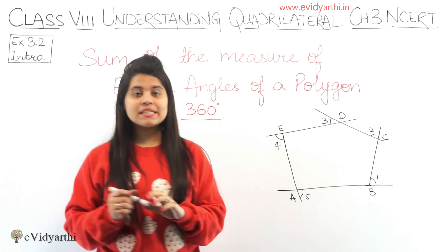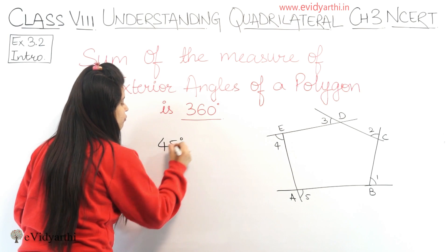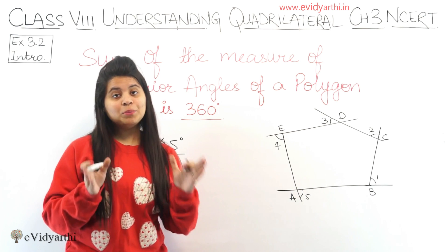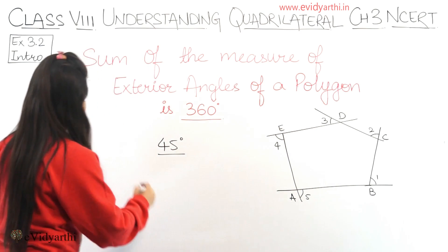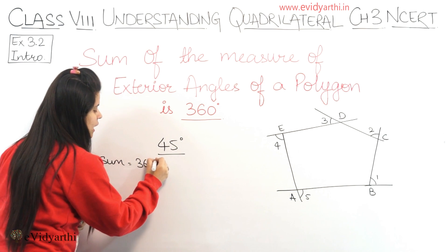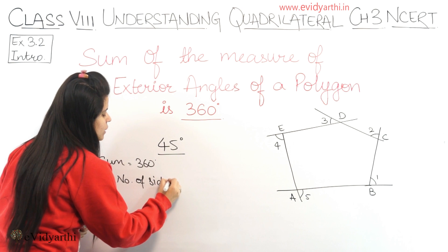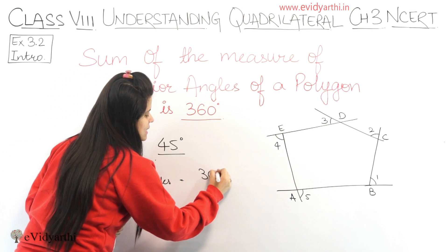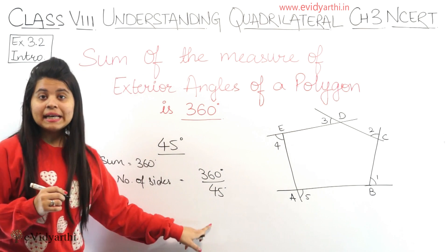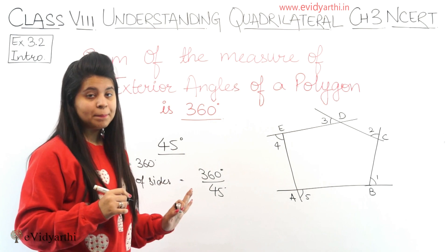Otherwise, aapko aise question given ho jisme aapko bata diya ki exterior angle 45 degrees ka hai. Okay? Aapko bata nahi ki us polygon mein kitni sides hain. So, uske liye hum kya karte hain? Jab hamein pata hai sum of exterior angles is 360 degrees, so number of sides nikaalte hain — simply 360 divided by angle, means jo hamein degree measure given hoga angle ka, which is 45 degrees in the example.